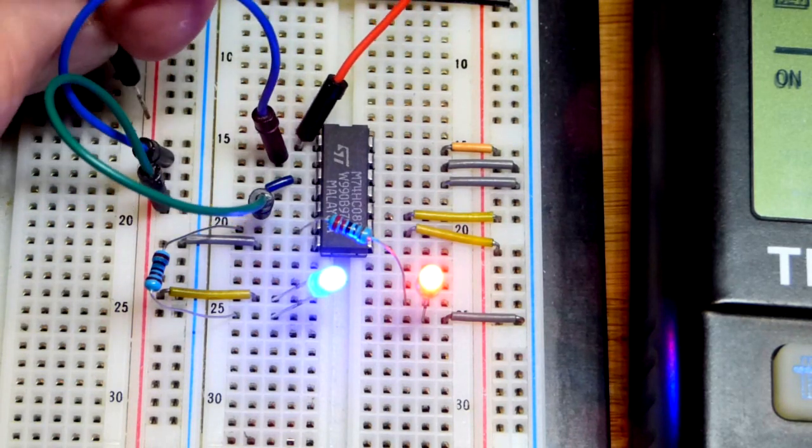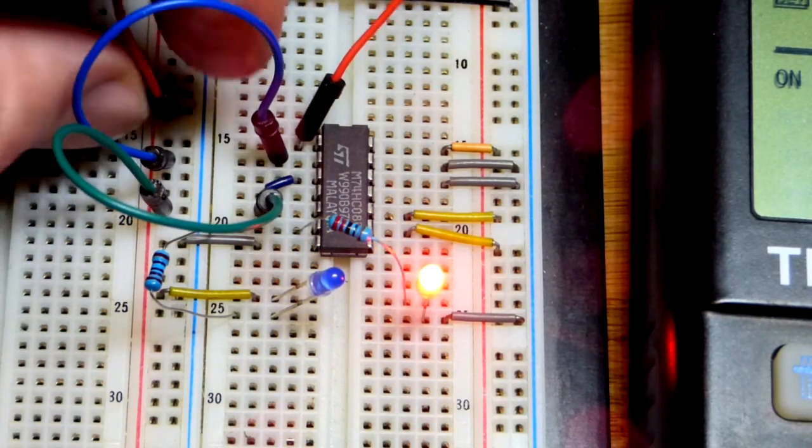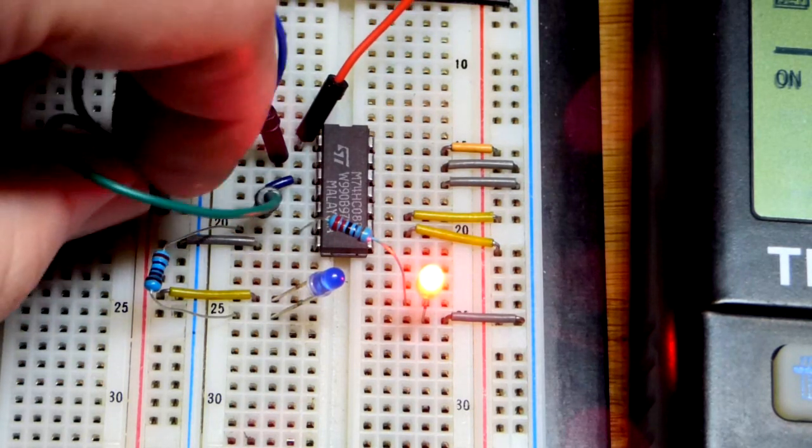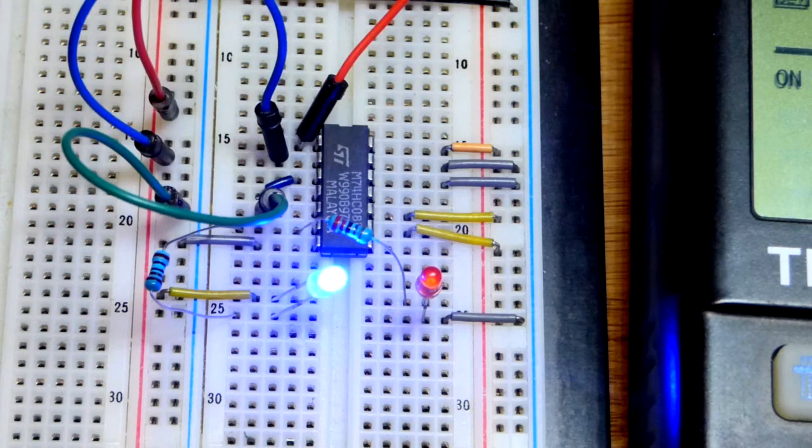And so usually you've got a pull-up or a pull-down resistor, but we're just doing a quick demonstration here. And there you can see, as long as all the inputs are high, then the output's high.